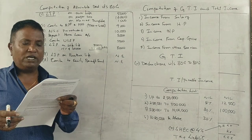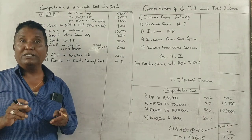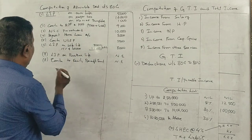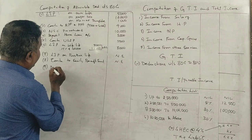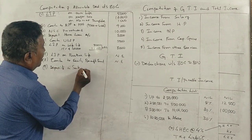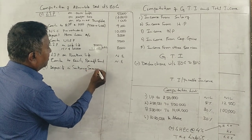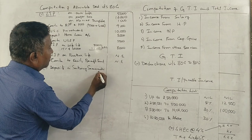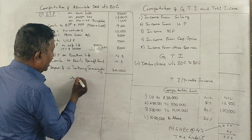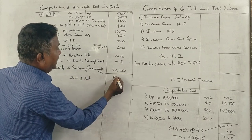Deposits in Sukanya Samridhi Account — eligible. The actual amount deposited is 20,000. So the total actual amount comes to 82,000.